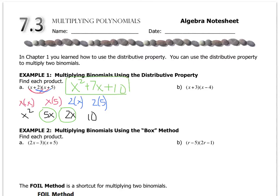If you want to try letter B on your own, go for it. If not, follow along. First I'll do x times x. Then I'll do x times negative 4. Then I'll do 3 times x. And then I'll do 3 times negative 4. So now I have to multiply. x times x is x squared. x times negative 4 is negative 4x. 3 times x is 3x. And 3 times negative 4 is negative 12.